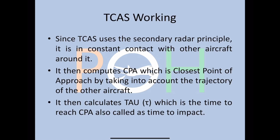Since TCAS uses the secondary radar principle, it is in constant contact with other aircraft around it. It then computes CPA, which is Closest Point of Approach, by taking into account the trajectory of the other aircraft. This CPA is continuously computed as and when the aircraft is communicating with other aircraft around it. It then calculates tau, which is the time to reach CPA, also called time to impact.